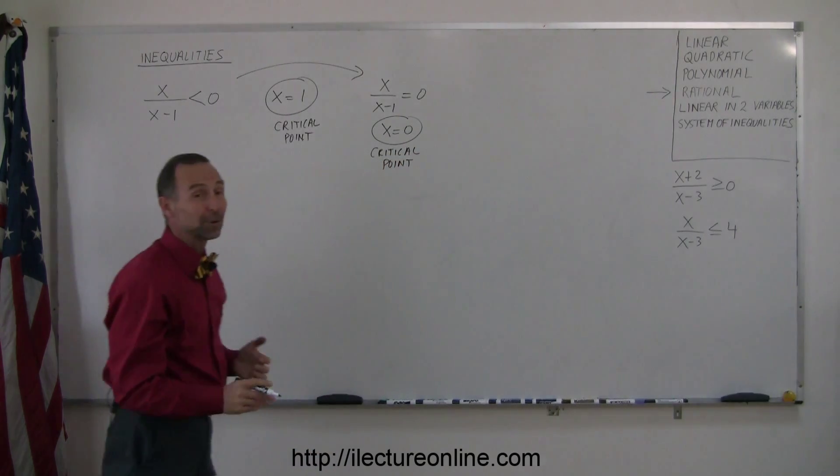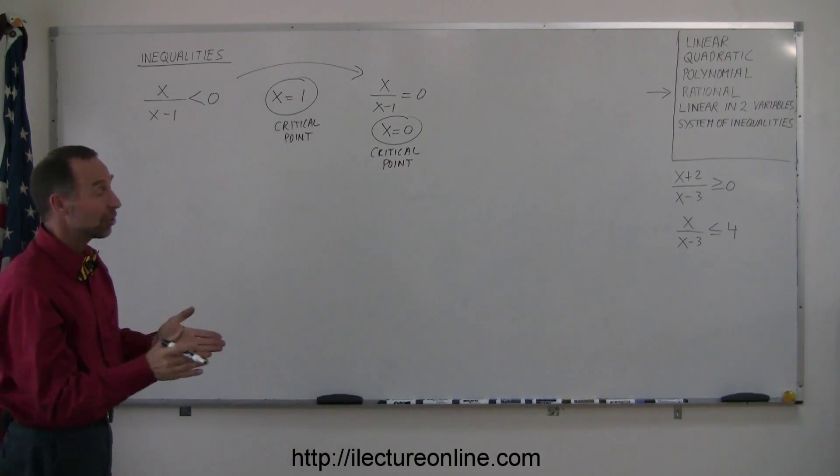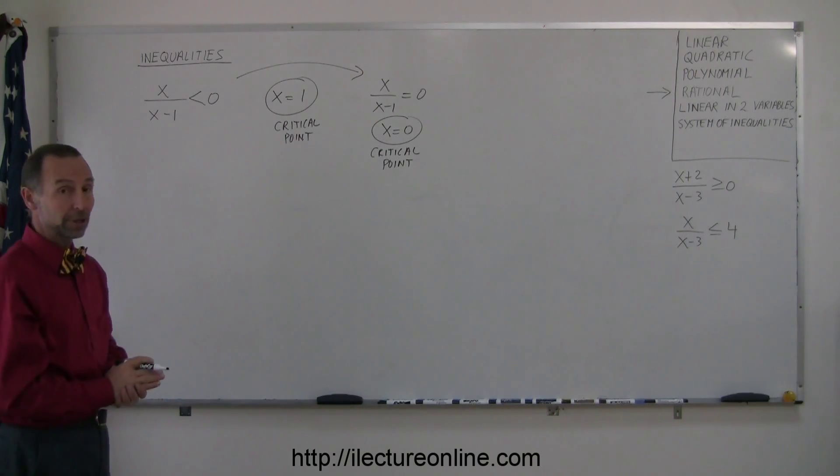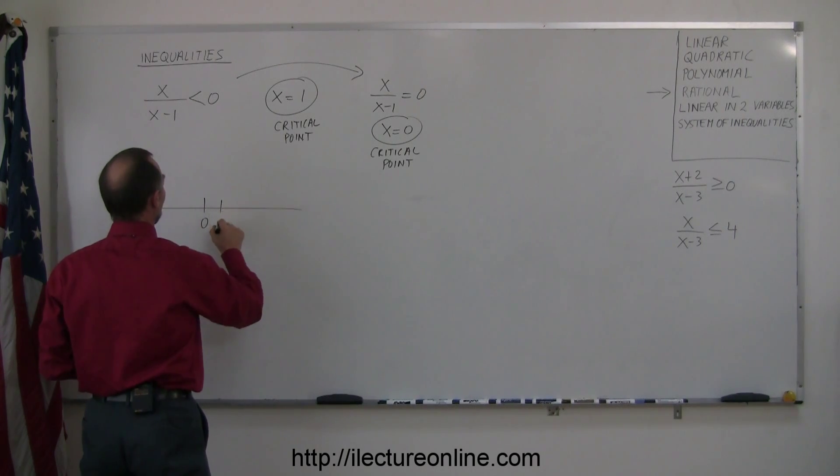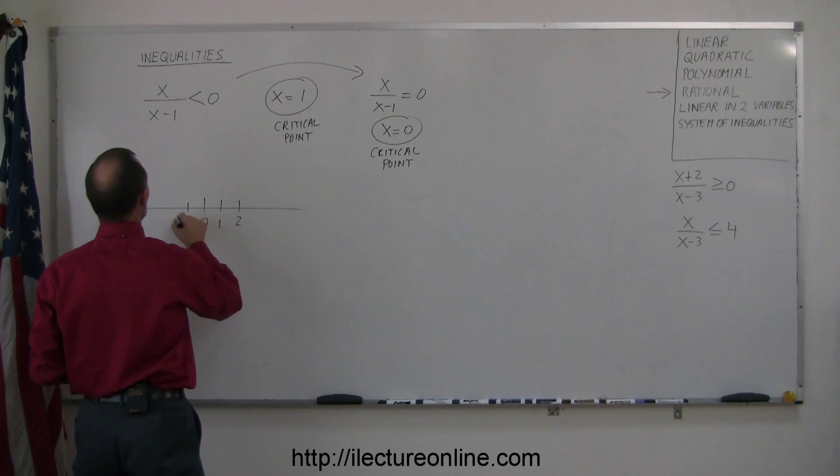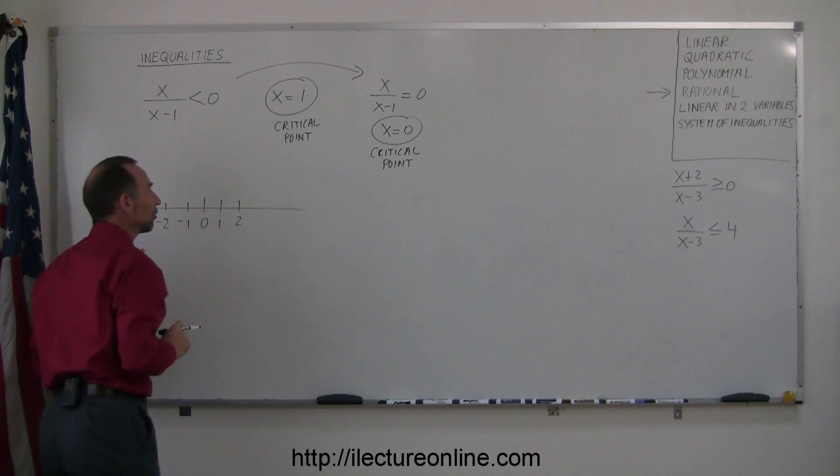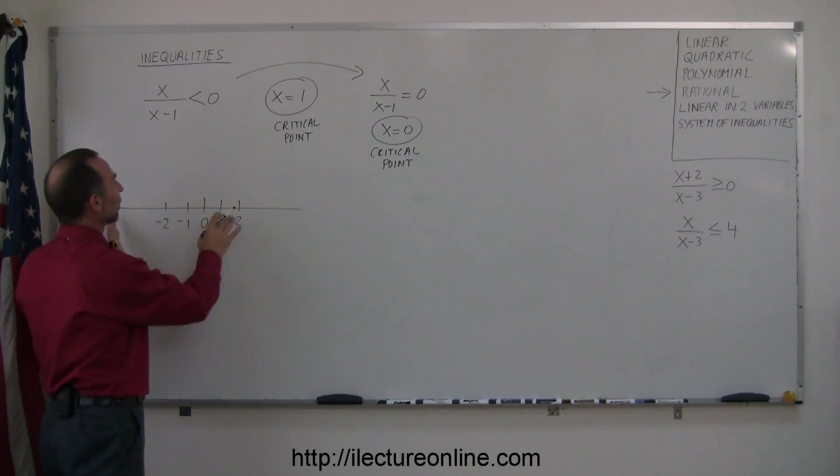I just call them critical points because those are the points that delineate the regions of the solutions that we're looking for. So now we need a number line. Here's the number 0, the number 1, number 2, negative 1, negative 2. And let's find the critical points on the number line.